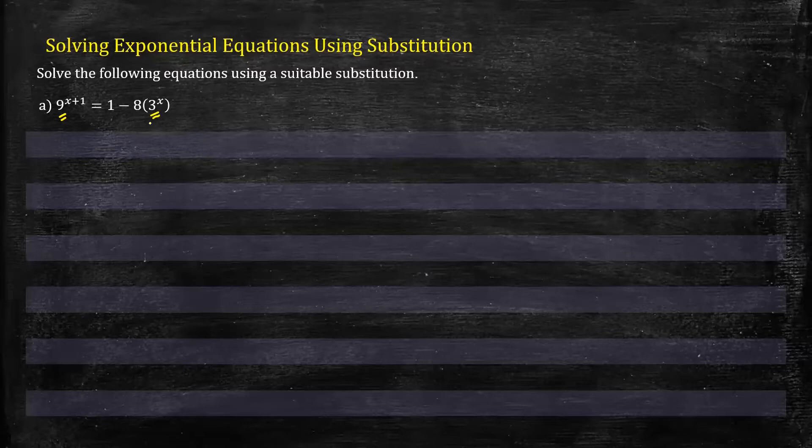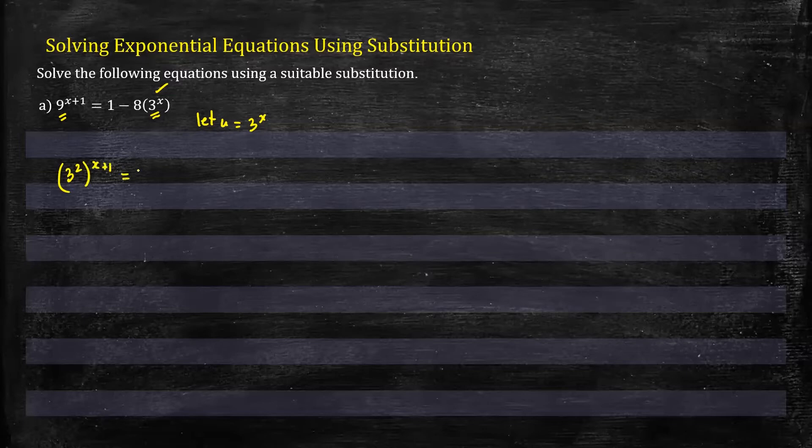So a useful substitution will be to let u equal 3 to the power x. The problem now is that this is 3 to the power x which is fine, but this is still 9 to the power x plus 1. So we need to change this 9 to be 3 squared, giving us 3^(2x+2) equals 1 minus 8 to the power 3x.